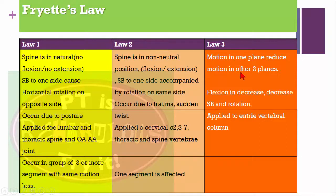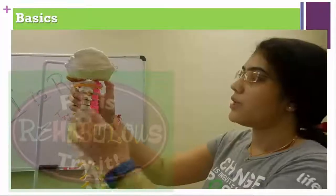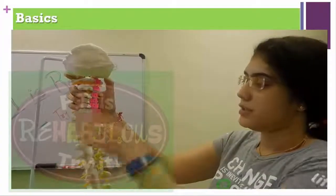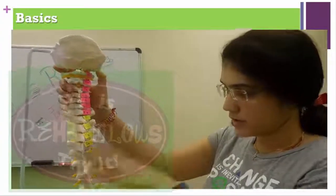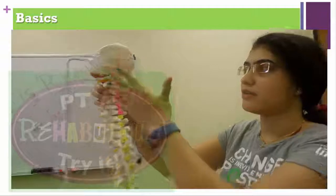The third law states that if motion in one plane is reduced, motion in the other two planes is also reduced. For example, if flexion is decreased, there will also be decreased side bending and rotation. This law applies to the entire vertebral column and will be helpful while assessing and mobilizing the spine.